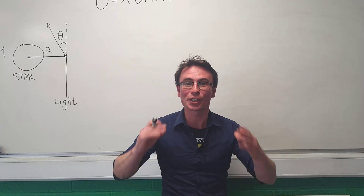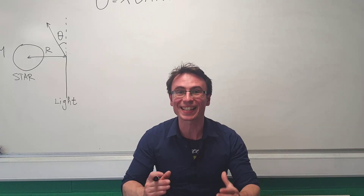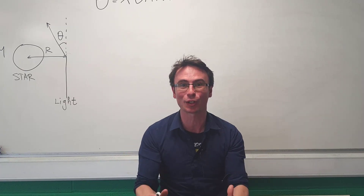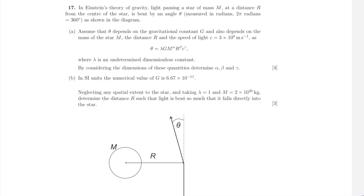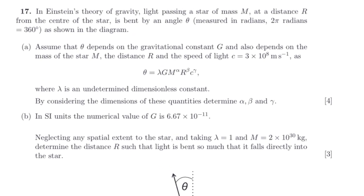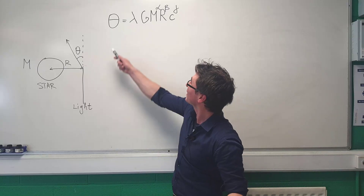The gravitation of stars bends light as it passes close to them. Let's derive an expression for this using the 2021 Oxford Physics Admissions Test.